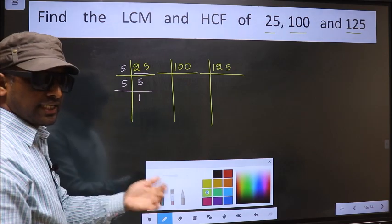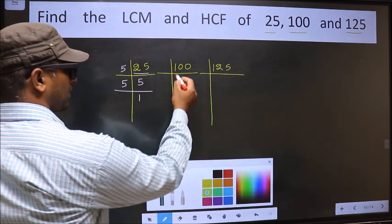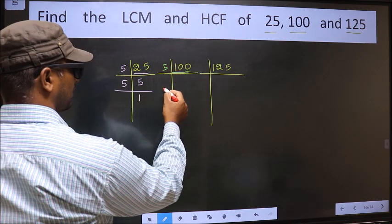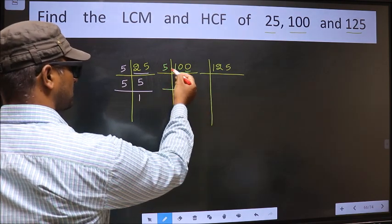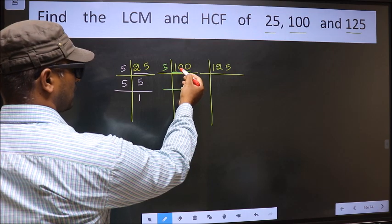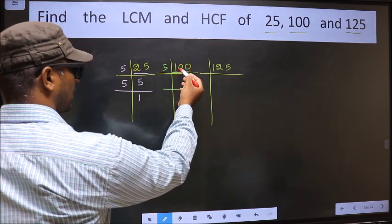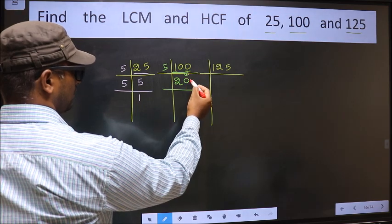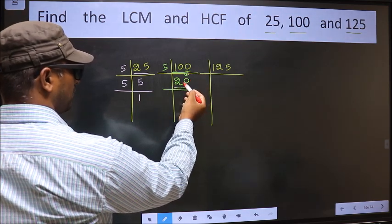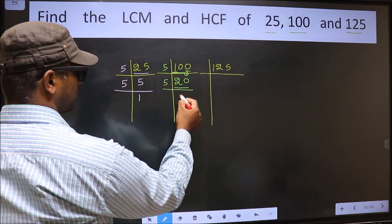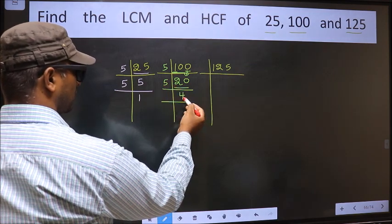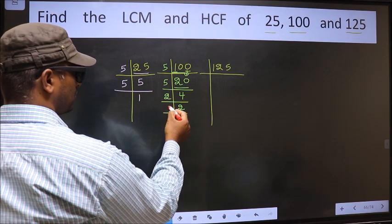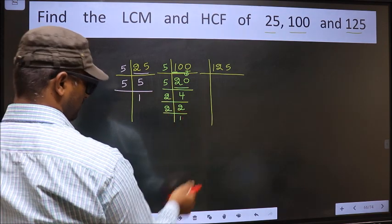Now the other number, 100. Last digit 0, so we take 5 here. The first number 1 smaller than 5, so we take 2 numbers, that is 10. When do we get 10 in 5 table, 5 twos 10. This 0 as it is down. Now here we have 20, 20 is 5 times 4 is 20. Now 4 is 2 twos 4. Now we have 2, 2 is the prime number, so 2 once 2.